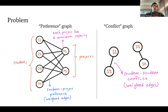For each individual we are given their project preferences, giving rise to a project preference bipartite graph like the one you see on the left. Moreover, we are given a conflict graph representing individuals that should not work together if possible. This might be due to skill overlaps, diversity requirements, or other reasons.